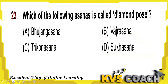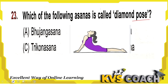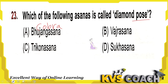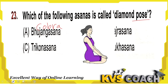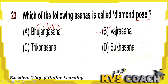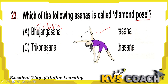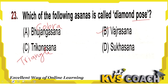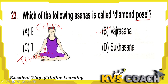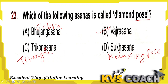Next: which of the following asanas is called the diamond pose? First is bhujangasana, also known as cobra pose — you can see it looks like a cobra snake. Second is vajrasana — this is the diamond pose. Option B is the right answer. Third is trikonasana, also known as triangle asana. Fourth is sukhasana, known as the relaxing pose. So the right answer for diamond pose is vajrasana — option B.